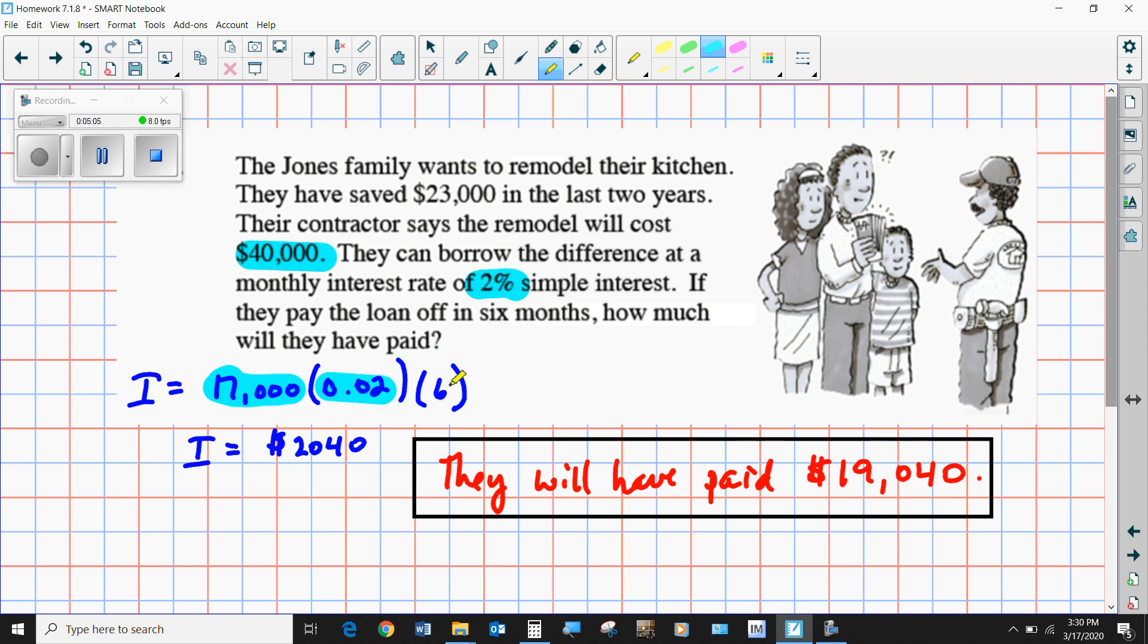If they pay the loan off in six months, how much will they end up paying? They'll end up paying $17,000 times 2% times 6, which is $2,040. So that's interest alone. When you add that to the $17,000, it ends up being $19,040 that they would have to pay back in order to pay this contractor the $40,000. So it actually cost them $42,000 in the end when you think about that extra interest.